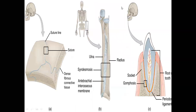In summary, synarthrosis or fibrous joints are found in the sutures of the skull, in the hand bones, in the leg bones between the radius and ulna and tibia and fibula, and in the gomphosis. This concludes the first part on joints, in which we have discussed the synarthrosis or immovable joint.